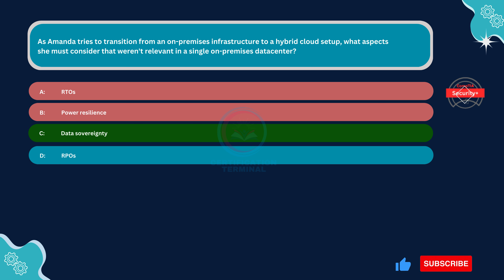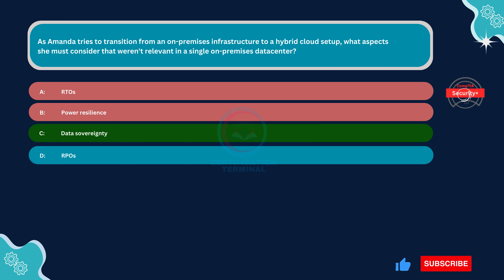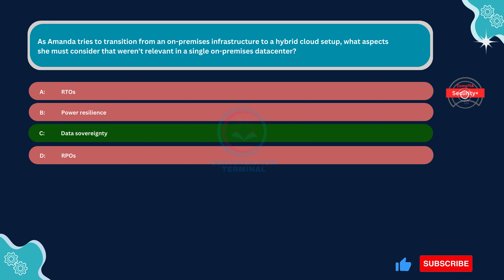Option B, Power Resilience, is incorrect. Power Resilience refers to the ability of infrastructure to withstand power outages or failures and is a critical consideration in both on-premises and hybrid cloud environments. Option D, RPOs, is incorrect. Recovery point objectives, RPOs, refer to the acceptable data loss threshold in the event of a disruption. Similar to RTOs, RPOs are essential in disaster recovery planning and are relevant in both environments, dictating how frequently data backups or replication must occur. Therefore, RPOs are not unique to hybrid cloud transitions.